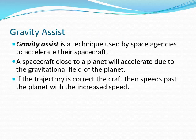Space agencies accelerate their spacecraft by using the gravitational fields of planets - this is called gravity assist. It saves on the amount of fuel needed. They accelerate by making an approach to the planet then accelerating away, and they need to be going at a particular angle to ensure they are not captured by the planet or moon being used.